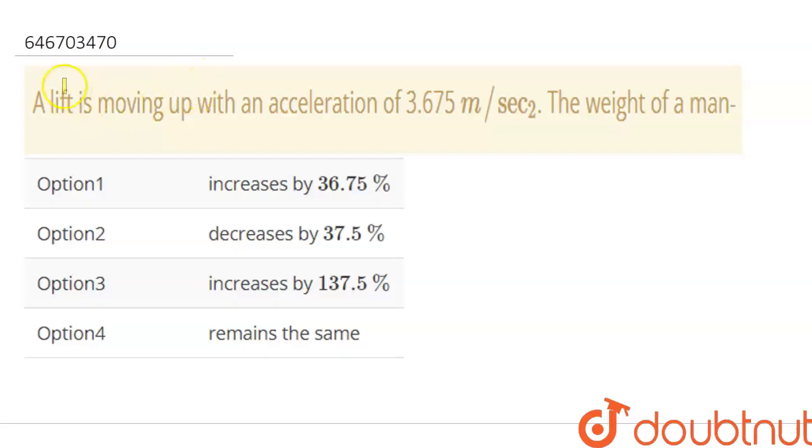Hello students, the question is: a lift is moving up with an acceleration of 3.675 meters per second square. The weight of the man is increased by 36.75% or decreased by 37.5% or increased by 137.5% or remains the same.